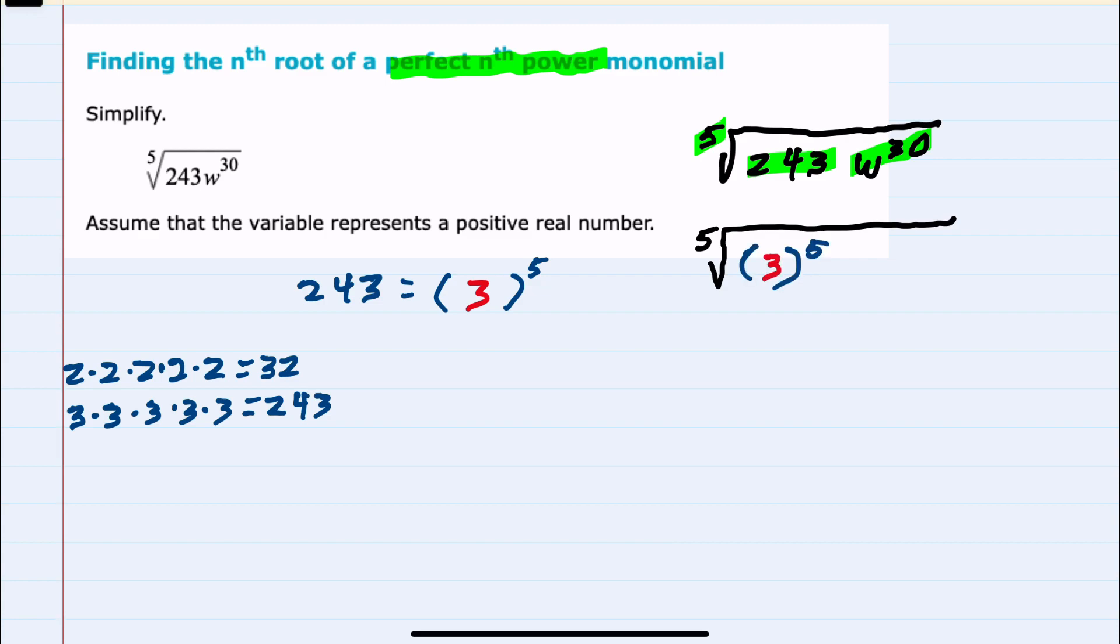The second part is w to the 30. We should also be able to write that as some value to the fifth power. We know we're going to have a w on the inside, and here the power would have to be 6.